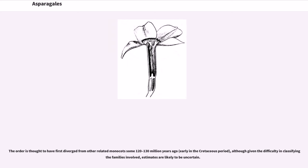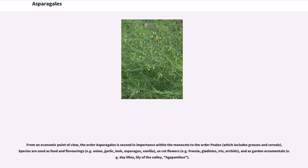The order is thought to have first diverged from other related monocots some 120 to 130 million years ago, early in the Cretaceous period, although given the difficulty in classifying the families involved, estimates are likely to be uncertain. From an economic point of view, the order Asparagales is second in importance within the monocots to the order Poales, which includes grasses and cereals.